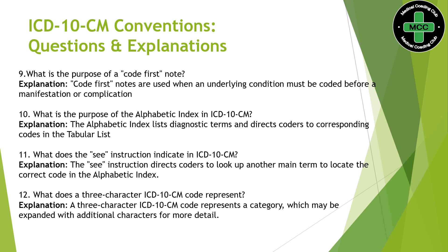What is the purpose of the alphabetic index? As mentioned earlier, the alphabetic index is a list of diagnostic terms listed alphabetically, and it guides coders to corresponding codes in the tabular list — it directs you to a particular code range. What does the 'See' instruction indicate? The 'See' instruction directs the coder to look up another main term to locate the correct code in the alphabetic index. For example, if you look up 'carcinoma,' you have to go to 'neoplasm' and then take the code.